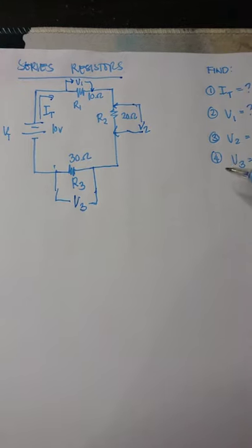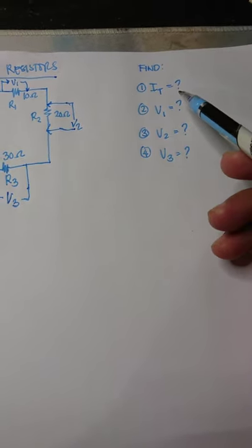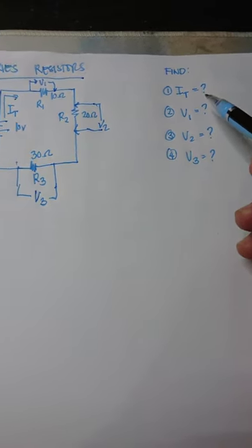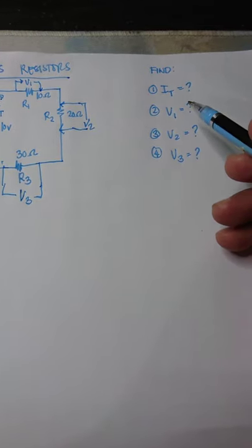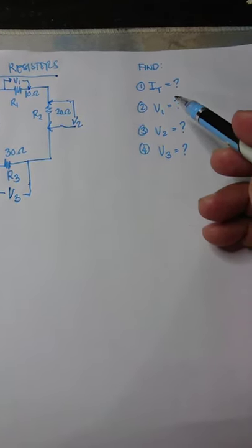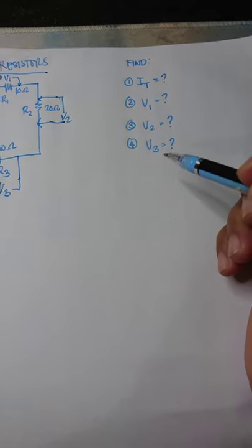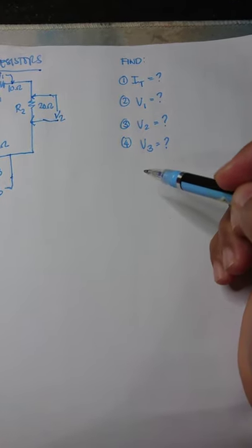So how are we going to solve the missing quantities? Remember we will be using the rules of series circuit as well as Ohm's law.